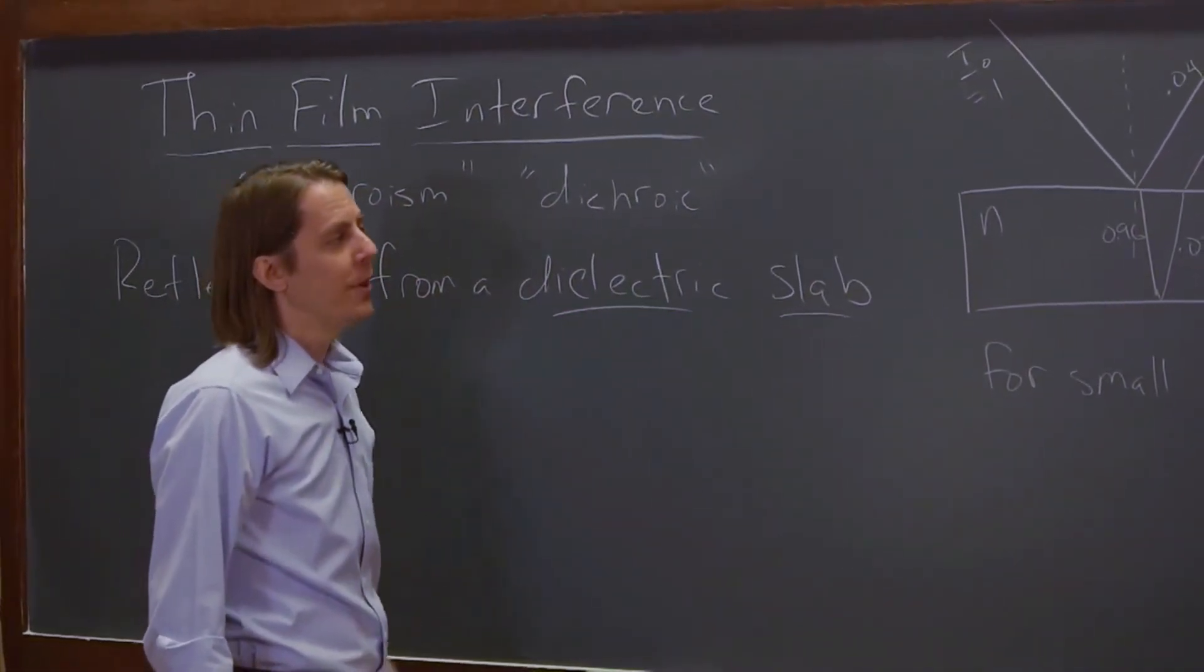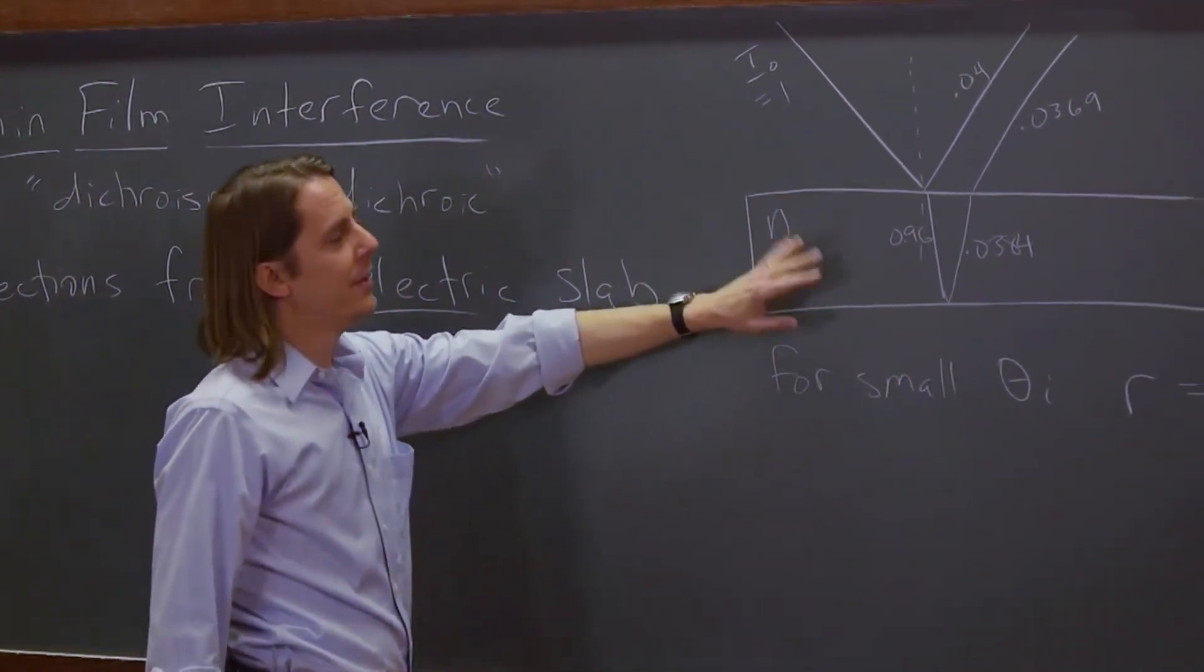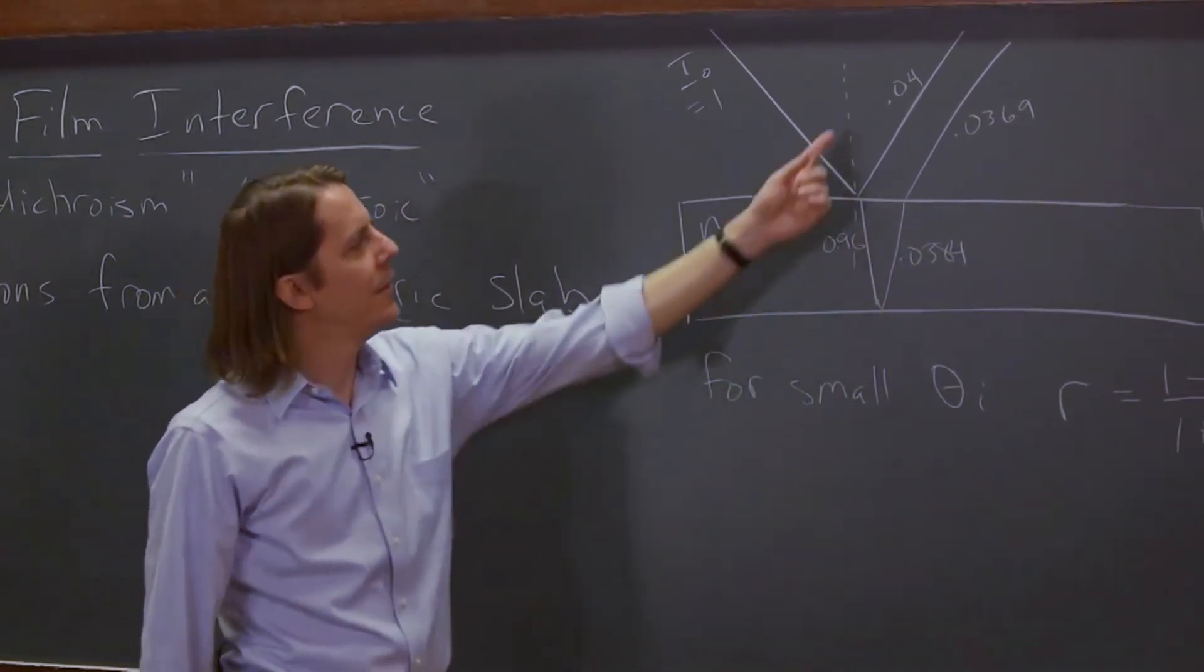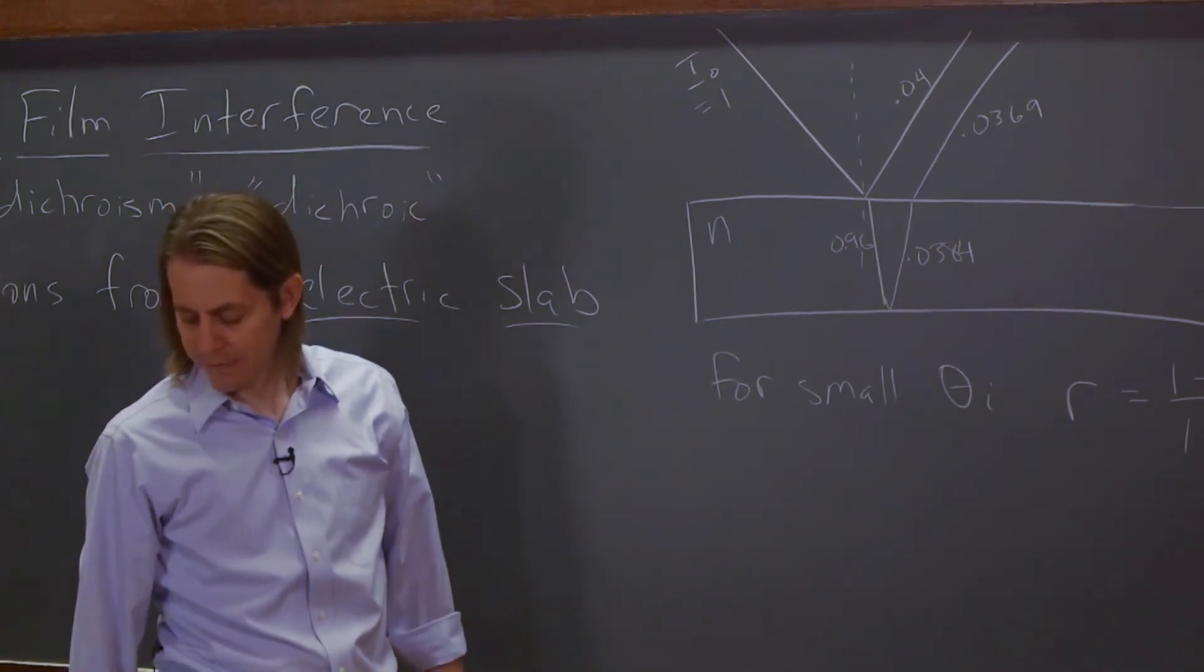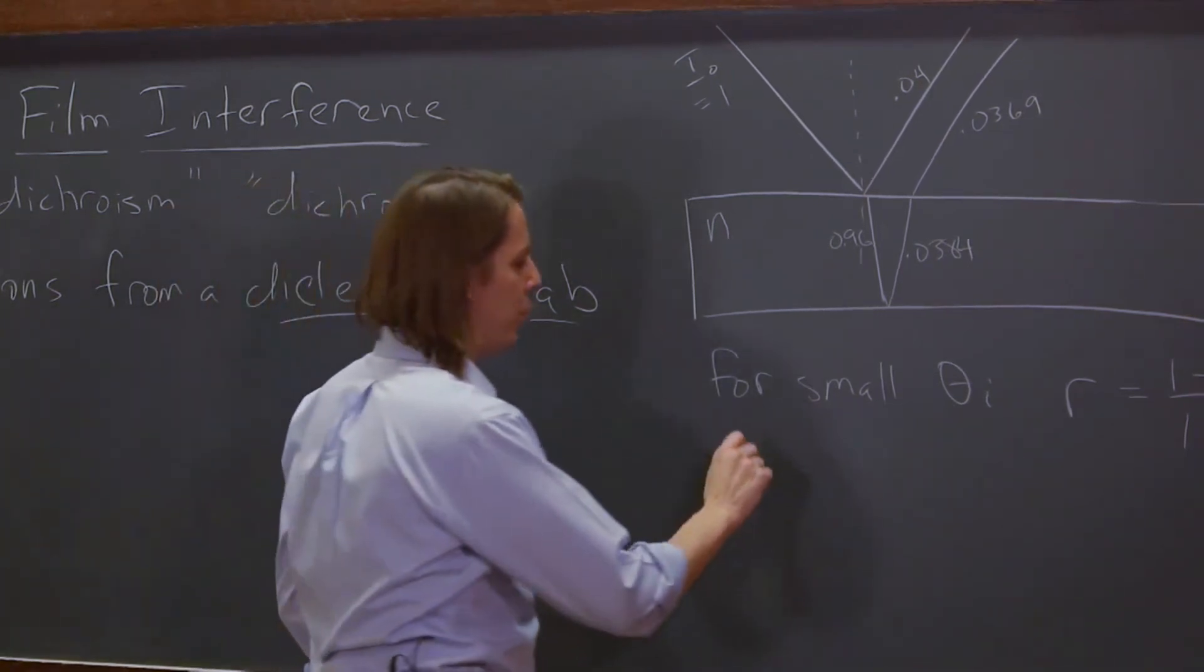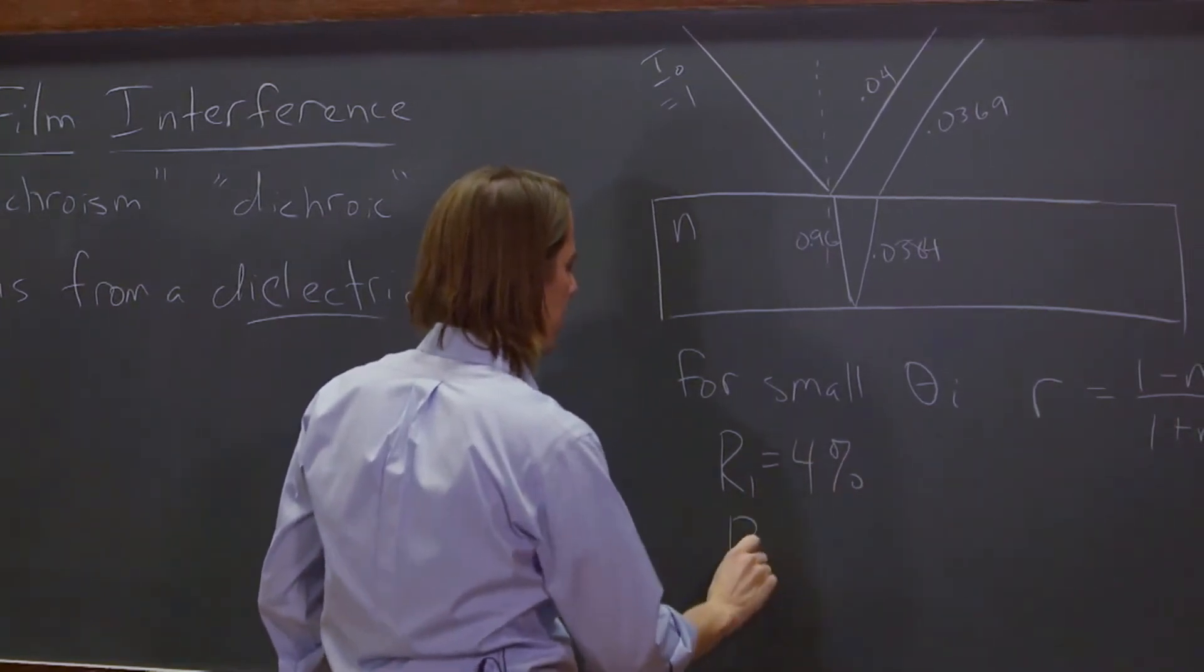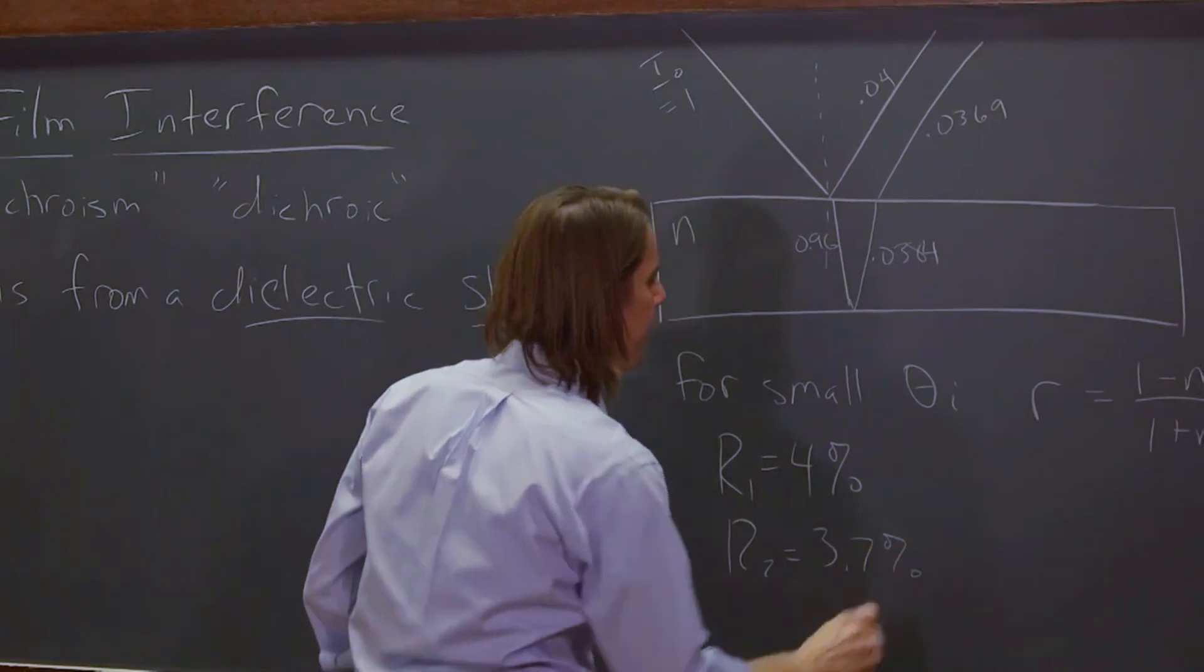So when you do this reflection off of a thin film, meaning it has a top surface and a bottom surface, and you consider both surfaces, you actually get two beams coming out. And their power is roughly the same. Okay? When you're doing theoretical physics, you can say 4 equals 3.69. Ah, they're the same. All right? So let's call this one R1 equals 4%. R2 equals 3.7%, more or less.